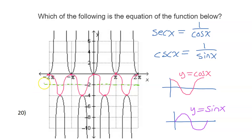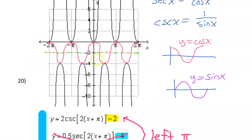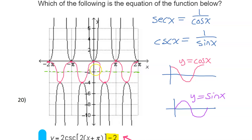So we need to figure out, considering that the graph has been shifted to the left by pi, is this a cosine function that's been shifted to the left pi, or is it a sine function that's been shifted to the left by pi?